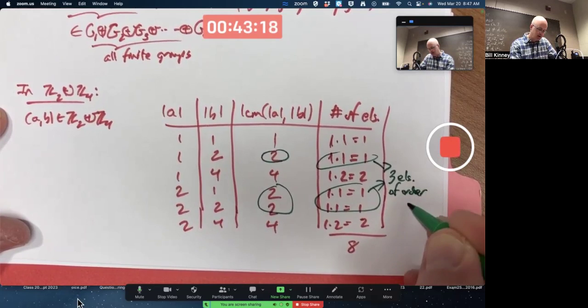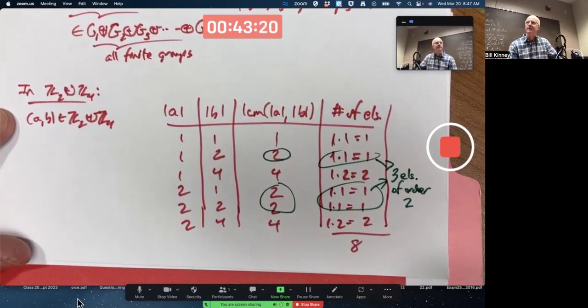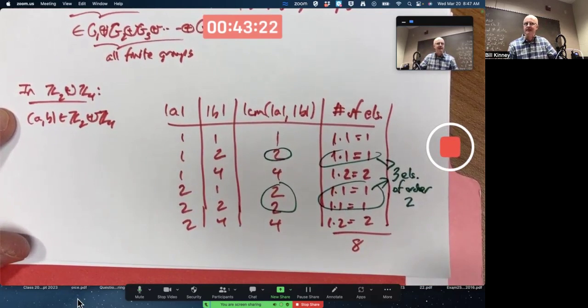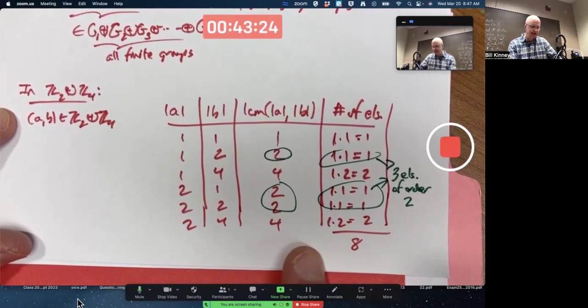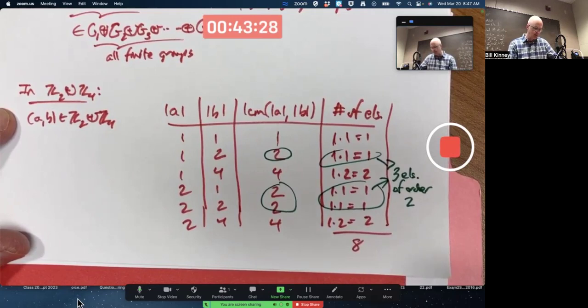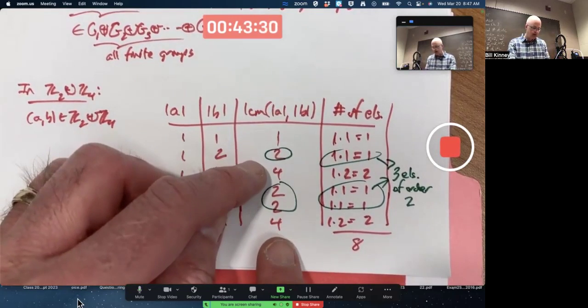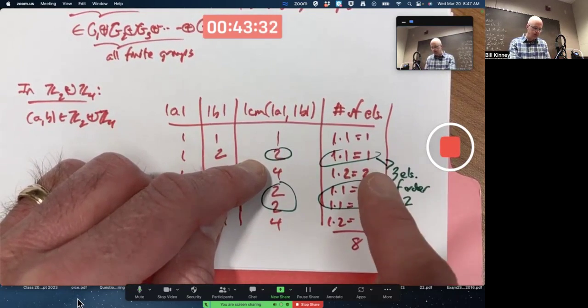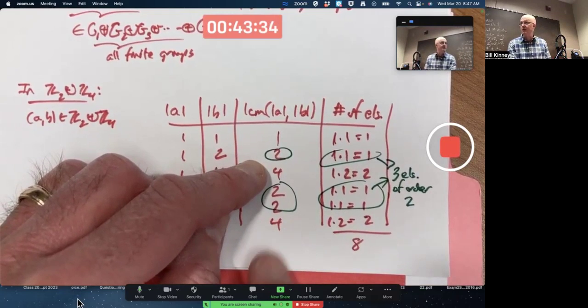Just like we listed out before and saw there were three elements of order 2 here, we can use the LCM analysis. But the LCM analysis does more for us. It also, for example, shows us how many elements there are of order 4. They come from these two rows. 2 plus 2, 4. There are going to be four elements of order 4.